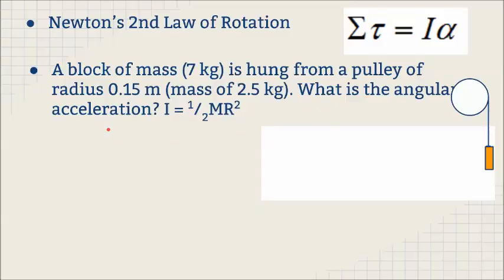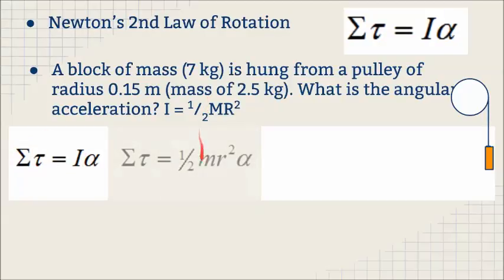So on this problem, since we want angular acceleration, that comes right from Newton's second law. All we have to do is know what I is and know what the torque is. The I is given in the problem, so we're going to use that one half MR squared. Don't be concerned with the difference between capital M and small m. It's just a notation. We have all the numbers for that. We have M as the mass and we have R, and we're looking for the angular acceleration. So all we have to do is calculate the torque.